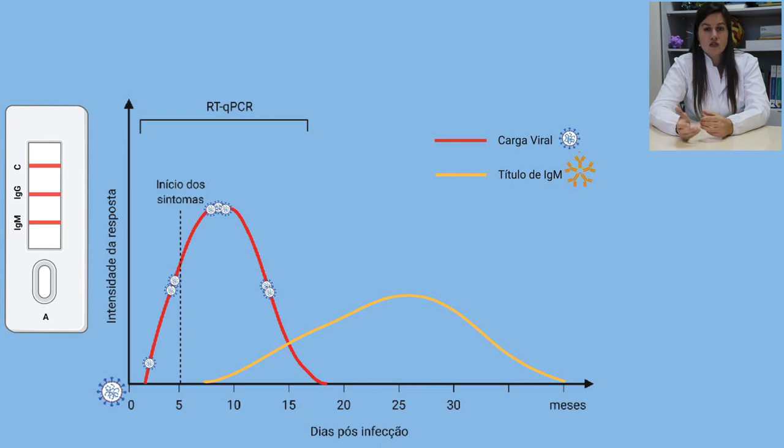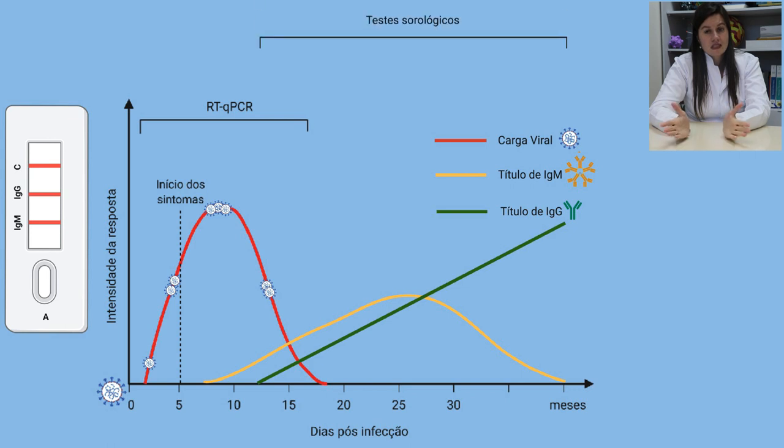Em mais ou menos 10 dias, começam a aparecer os anticorpos do tipo IgG. Pelo conhecimento que se tem atualmente sobre o novo coronavírus, ainda não se sabe por quanto tempo os anticorpos do tipo IgM e IgG permanecem no nosso corpo. E também se tem observado que há uma grande variação no tempo de aparecimento desses anticorpos de pessoa para pessoa.